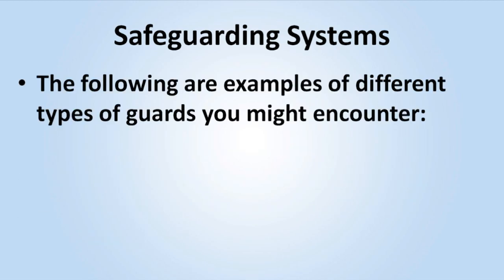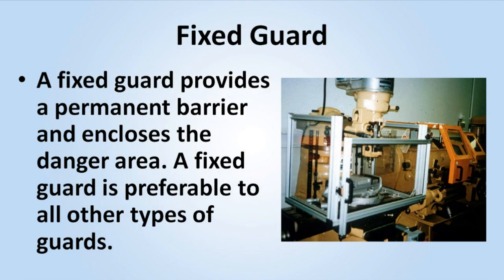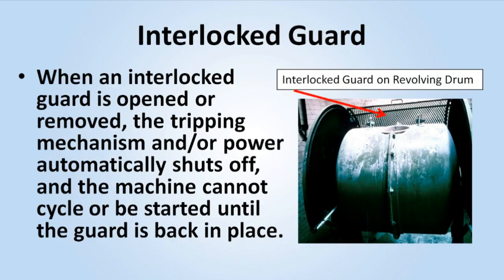The following are examples of different types of guards you might encounter. A fixed guard provides a permanent barrier and encloses the danger area. A fixed guard is preferable to all other types of guards. When an interlocked guard is opened or removed, the tripping mechanism and/or power automatically shuts off, and the machine cannot cycle or be started until the guard is back in place.